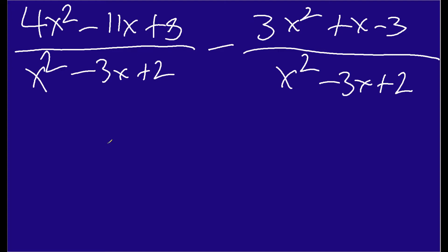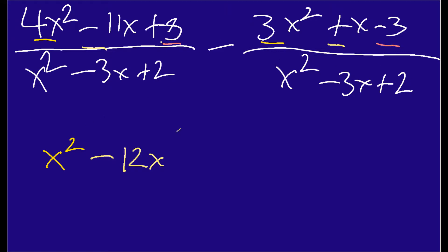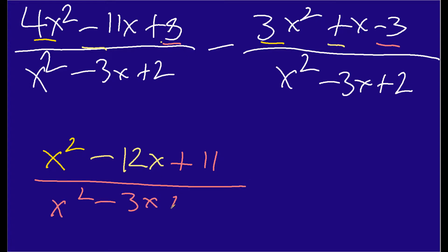The first thing we want to do is combine like pairs. So we're going to do 4x squared minus 3x squared — that will give us x squared. Next, we'll deal with negative 11x minus positive x, and that's going to give us minus 12x. Then 8 minus negative 3 is the same as 8 plus 3, and so we end up with positive 11. So all this over x squared minus 3x plus 2.